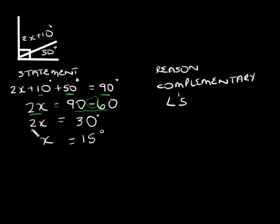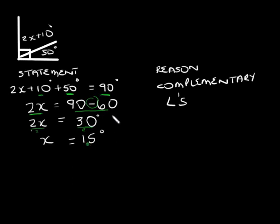We take the 60 over to the right and the sign changes, so we have 2x is equal to 30. Remember we need to solve for x, so we divide by 2 on both sides — because according to the law of equations, what you do on the left you must do on the right. Once you divide, you find that x is equal to 15.